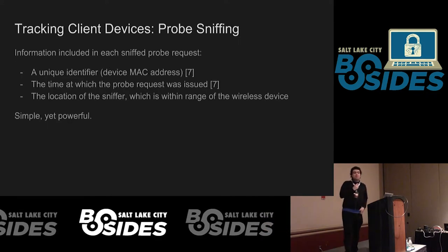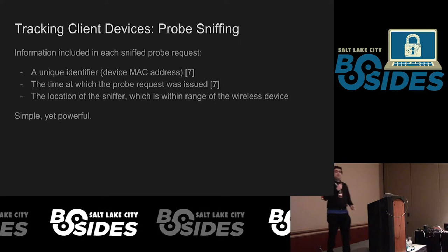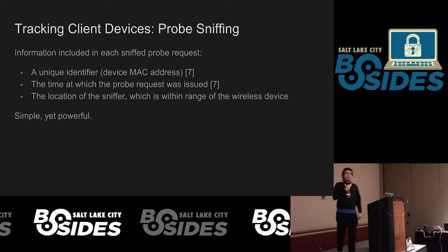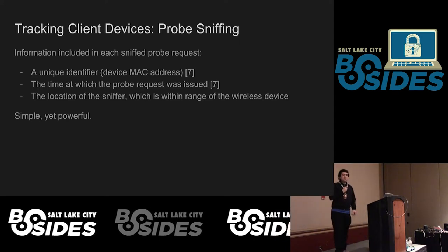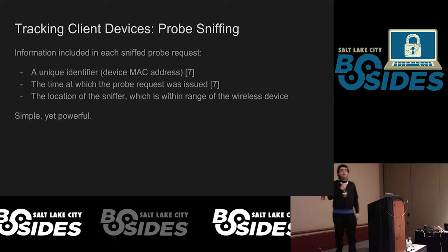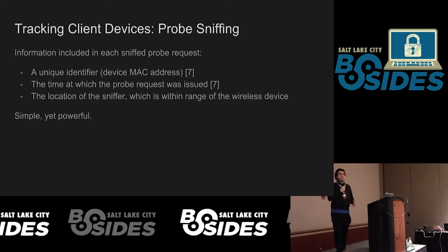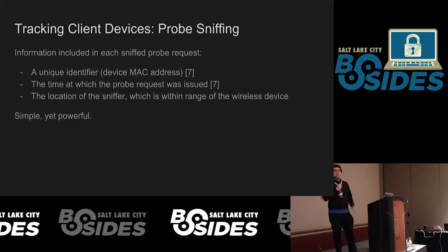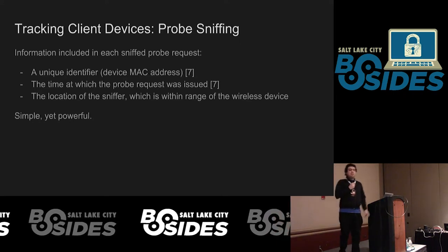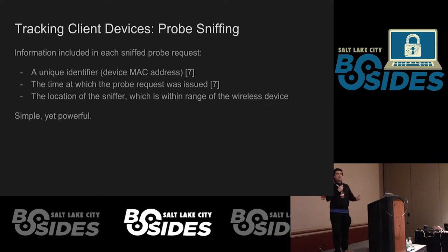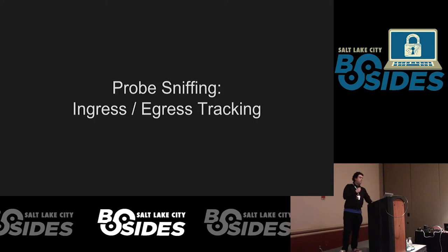What's in a probe request? A probe request sent from a device contains three basic pieces of information that are really powerful when combined. First, because it's a wireless packet, it will have a MAC address associated with the device. There will also be a timestamp — the time at which the probe request is issued. Finally, and this is implicit — not actually in the packet — simply because your wireless sniffer is within range of the device, you know something about the location of that device.